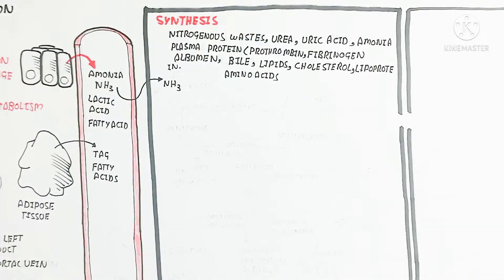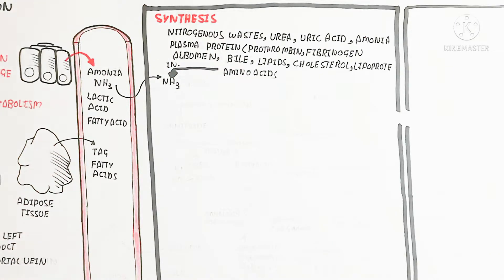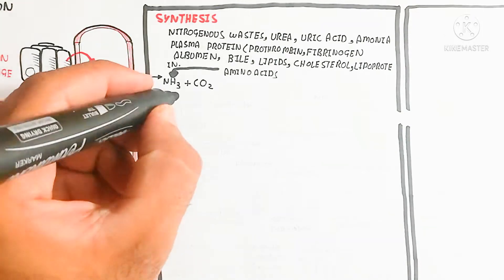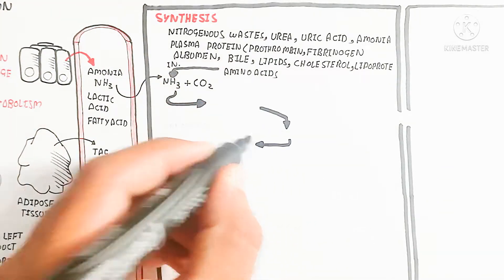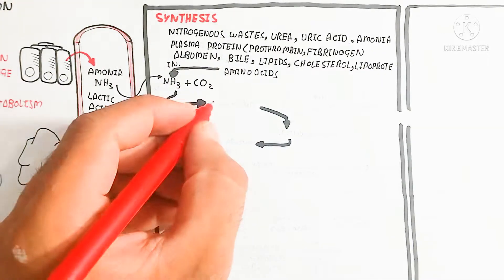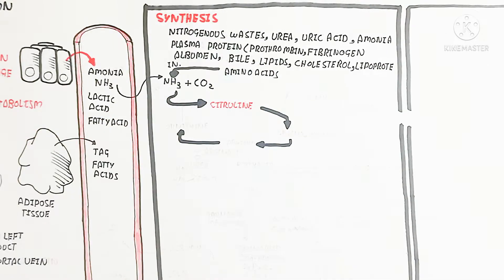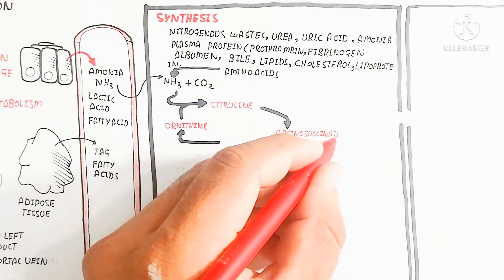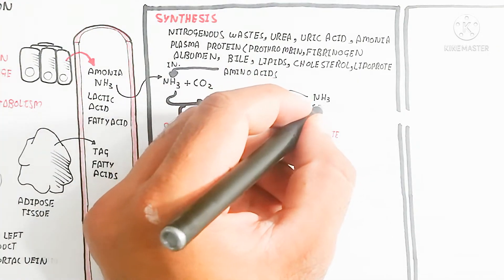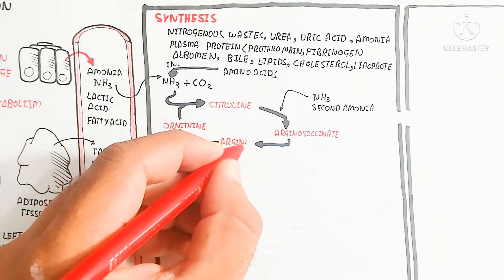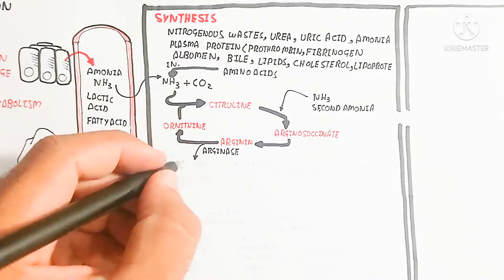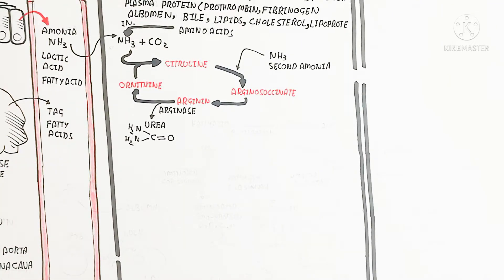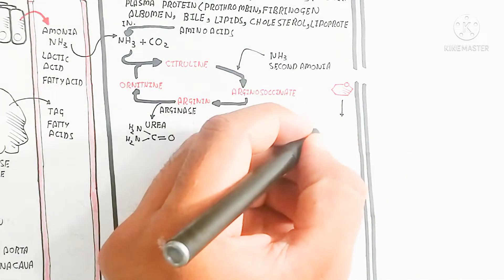In the urea cycle, ammonia is converted to urea. Ornithine is present first, and it converts to citrulline by binding with ammonia and carbon dioxide. Citrulline then reacts with a second ammonia molecule to form argininosuccinate, which becomes arginine. Arginine is then acted on by the arginase enzyme to produce urea, and ornithine is regenerated to continue the cycle.